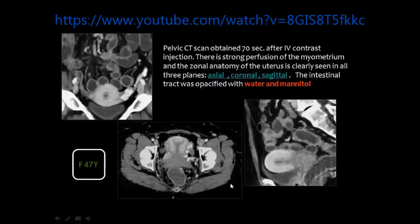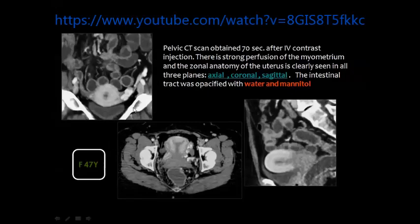Sometimes we may prepare the bowel using water or mannitol in order to distend the small bowel loops and separate them from other pelvic structures, but in most cases radiologists feel familiar with gastrografin in the bowel loops. This is the coronal reformatted CT image after contrast injection — you can see the uterus with the endometrial cavity, which is not enhancing similarly to the myometrium. The sagittal image shows the full configuration of the uterus including the fundus, the body, and the cervical canal.